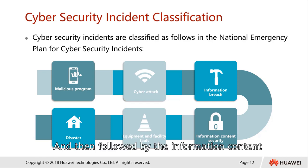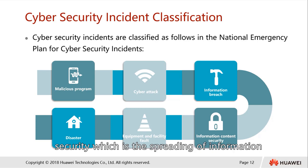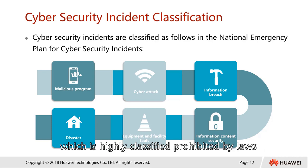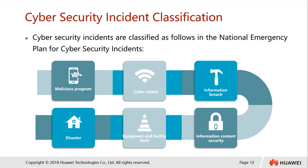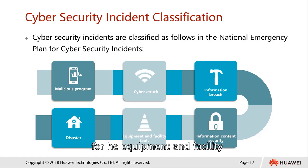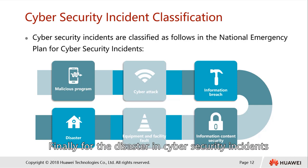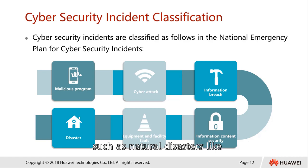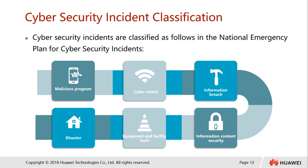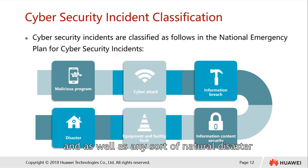Further classifications include information content security, which involves the spreading of information that is highly classified or prohibited by laws. We also have classifications for equipment and facilities, which usually involve hardware or software faults. Finally, for disasters in cybersecurity incidents, such as natural disasters like tornadoes, flooding, earthquakes, and other natural disasters.